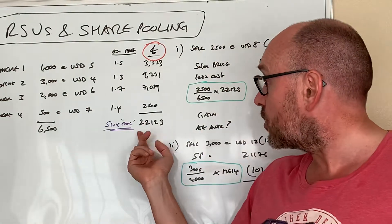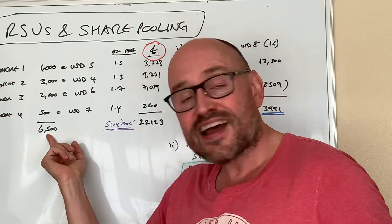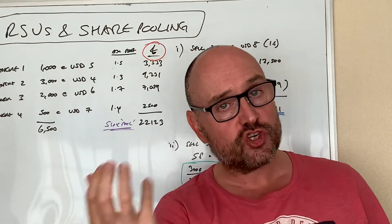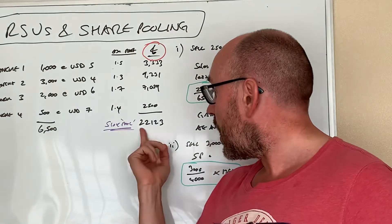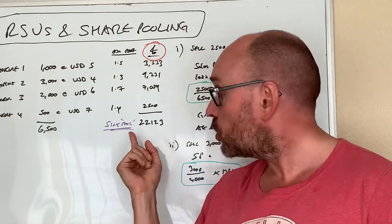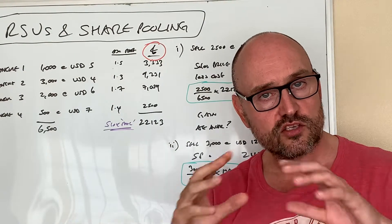So this individual, this employee, has accumulated six thousand five hundred shares in TechCo and the cost in the share pool is twenty-two thousand one hundred and twenty-three pounds.